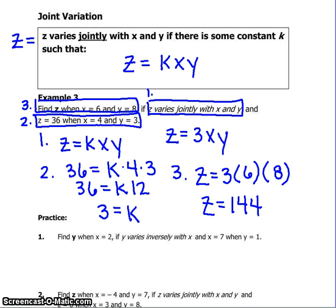Let's circle our answer of Z equals 144 and also the equation relating the variables. Now, please complete the three practice problems at the beginning of the paper and check your answers in the front when you are finished.